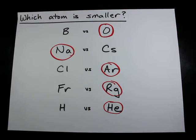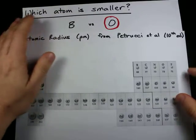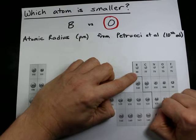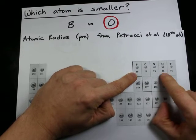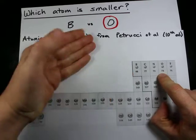Now I actually have a chart here where we can intercompare those two. Boron versus oxygen. Boron has an atomic radius of 88 picometers, according to this chart, and oxygen is 73 picometers. Oxygen is smaller. We were right.